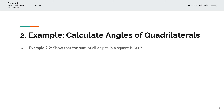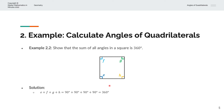In the second example, we're asked to show that the sum of all of the angles in a square is 360 degrees. So visually, we have a square with angles E, F, G, H. If we sum all of the angles — E plus F plus G plus H — and we know that each angle of a square is 90 degrees, we have 90 plus 90 plus 90 plus 90, which gives us 360 degrees. And we've shown that the sum of all angles in a square is 360 degrees.